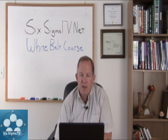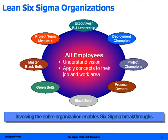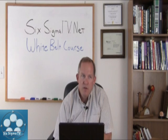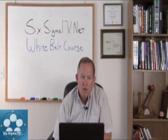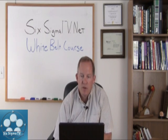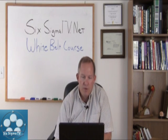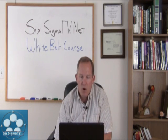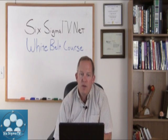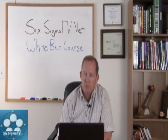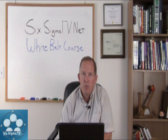At the top of this chart we have executives and business leadership, organizational leadership, deployment champions, and project champions. Each of these roles will be discussed in more detail on the next slide. We also have process owners, black belts, green belts, master black belts, yellow belts, and project team members. It's critical to understand that involving the entire organization enables Six Sigma breakthroughs and huge improvements in achieving the strategic objectives of the organization and the deployment of Six Sigma.